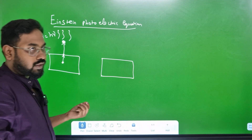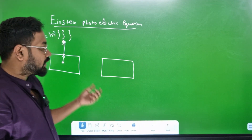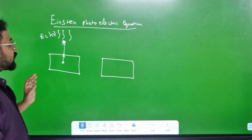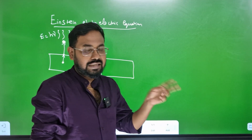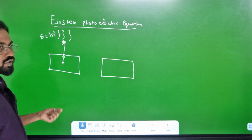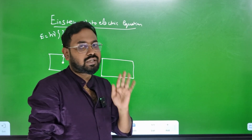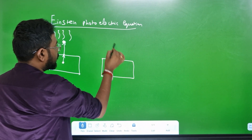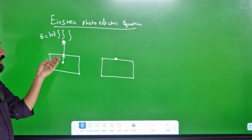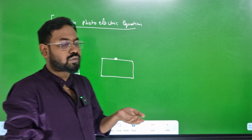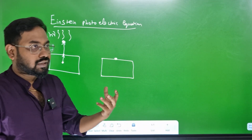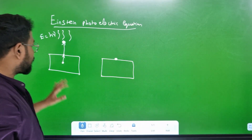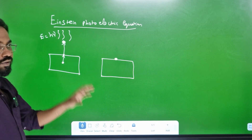The electron is emitted — the electron will eject. So there are two energies: one is the work function, which is the important part. That is the starting point.